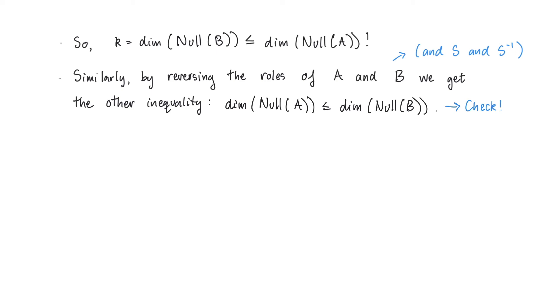Since we now have both inequalities, we conclude that the nullity of A is equal to the nullity of B. That's great! It's exactly what we were after. Now we can apply the dimension theorem.